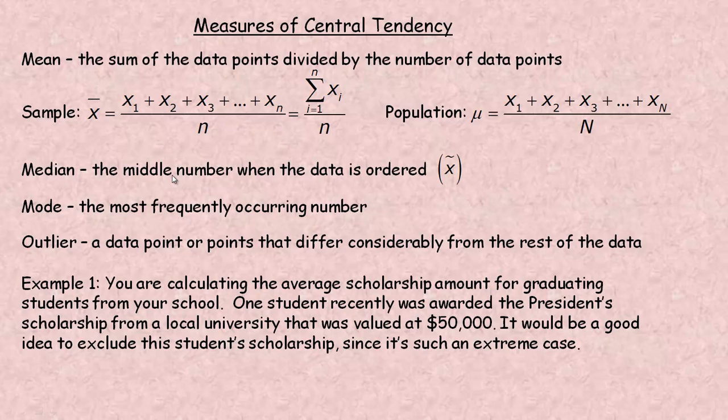The median is the middle number when the data is ordered. We normally write them from smallest to biggest. The mode is the most frequently occurring number. They're called measures of central tendency because these three statistics give you an idea of what a normal number in this group would be.